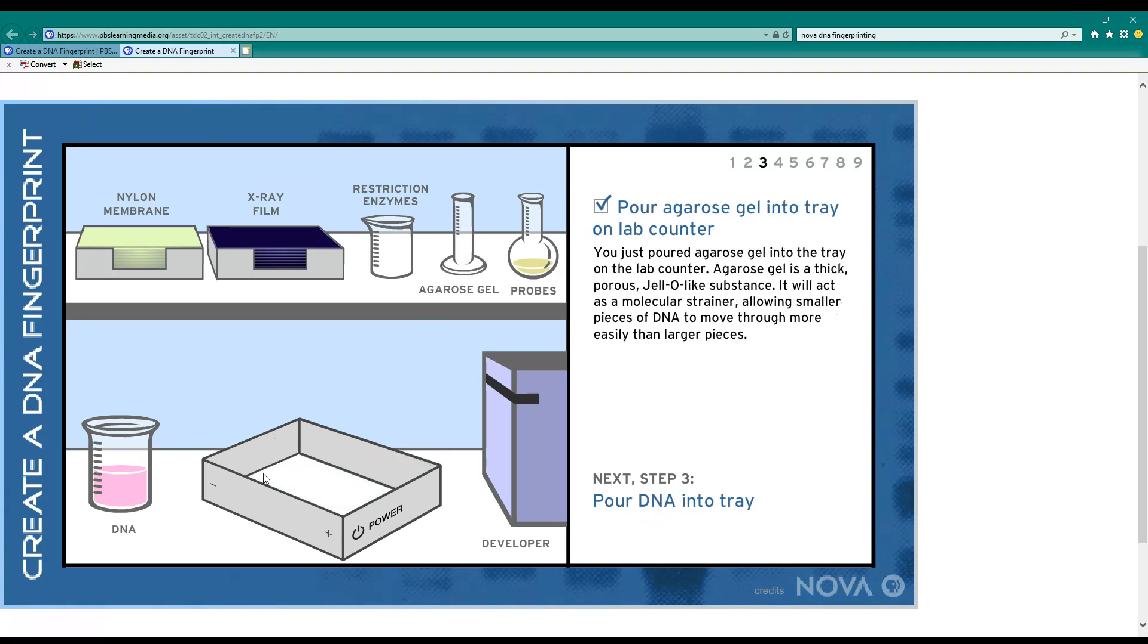Okay I have my jello in my tray and I've also got little tiny wells here, dimples in the jello. I pour my DNA into those dimples.